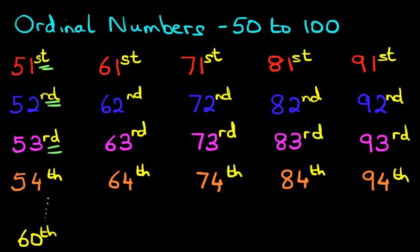And all of these carry on all the way until you get to 60. That also ends with a TH. So all of the numbers from the 4 right through to 5, 6, 7, 8, 9, and 0 all end with a TH.